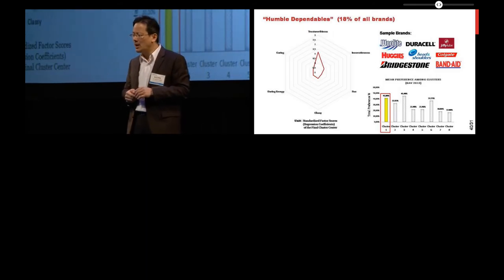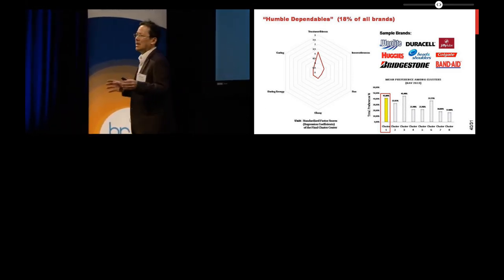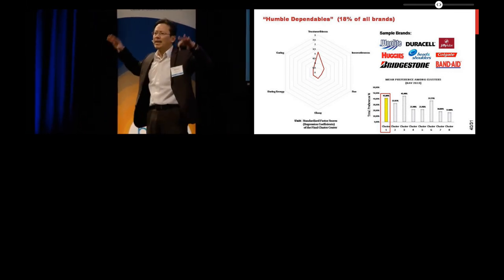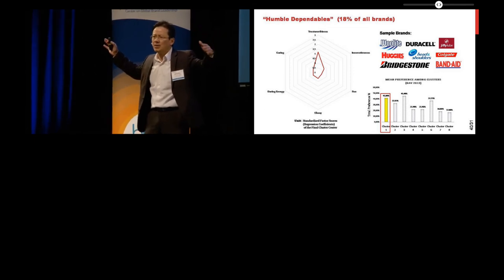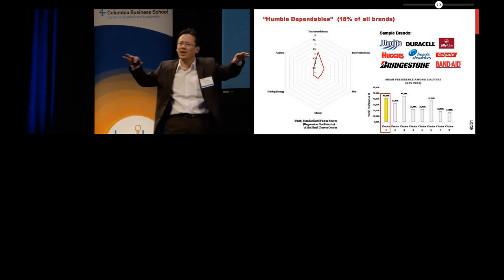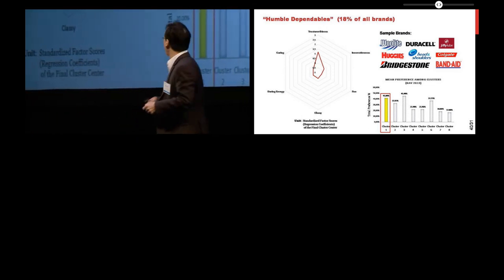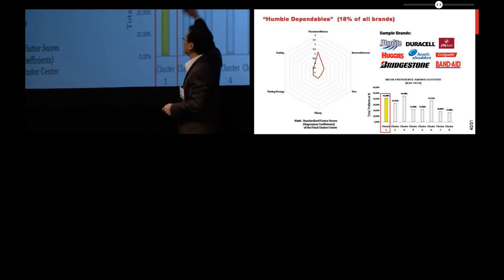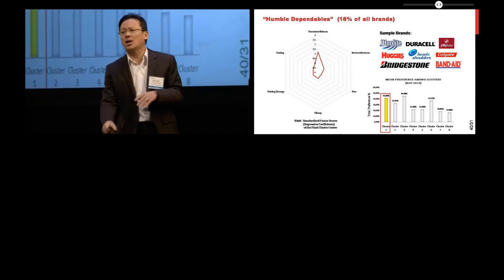So one of the things we did is also look at what are the major ways of competing on brand character. And what we did is a big analysis, called a cluster analysis, where we looked at 3,000 brands in 2013 and put them in eight buckets in terms of their profiles of brand character. And we tracked on this chart here how well they're doing in terms of brand preference. The higher the bar, the more brand preference those brands in that set are able to collect.